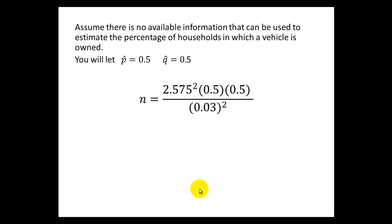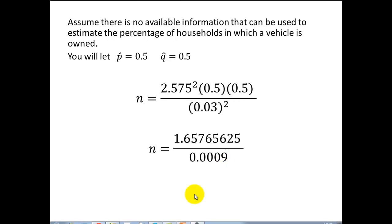Now we're just doing the same calculation as before. We're just now using 0.5 here and here. Here's an intermediate step if you want to check it with your calculator. Divide this out and we find that n is equal to 1841.84.